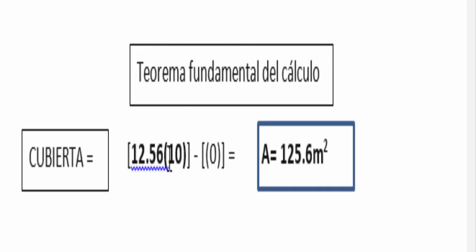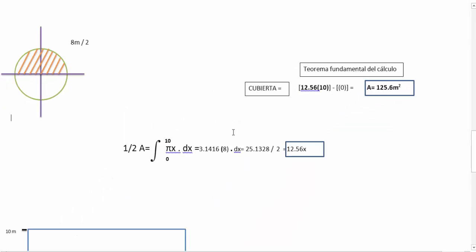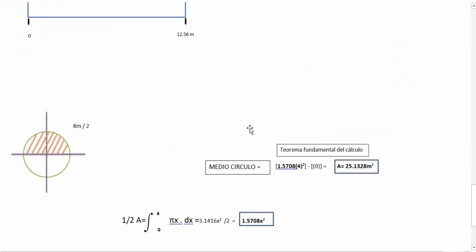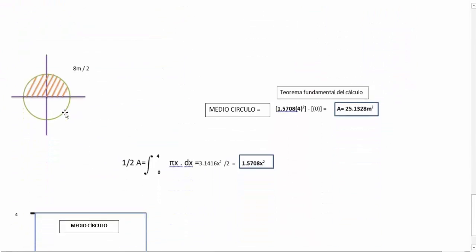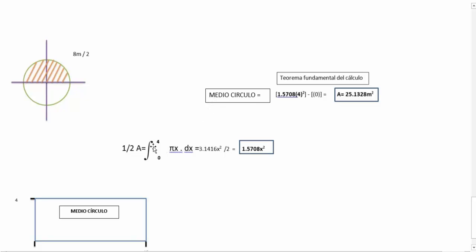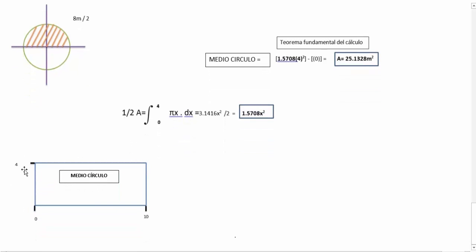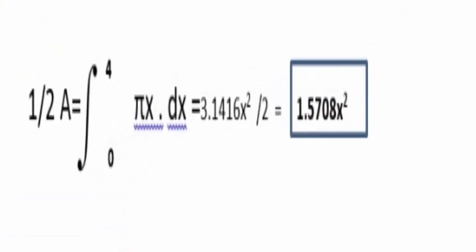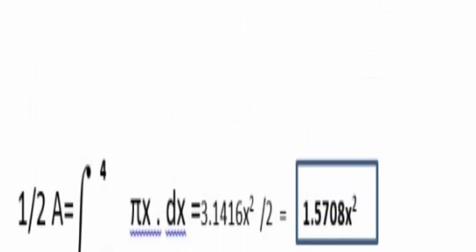12.56 x 10 menos 0, en total el área nos daría 125.6 m². Ahora calcularemos la parte 2, que es el medio círculo, multiplicando la integral con límite 4 y límite 0, con la misma fórmula pi por x por derivada de x.